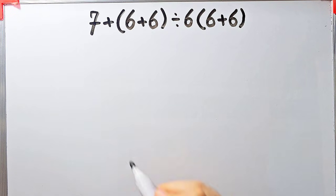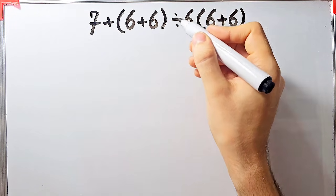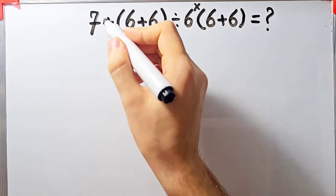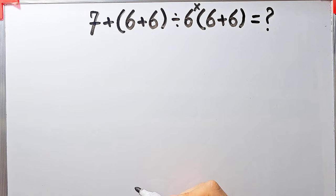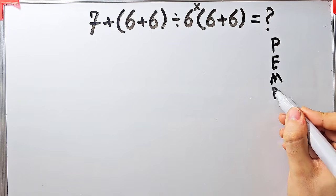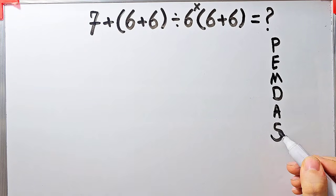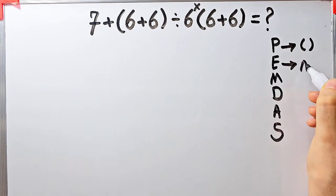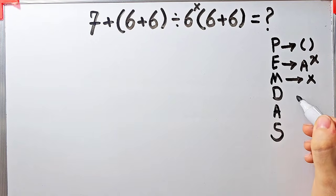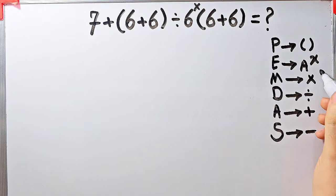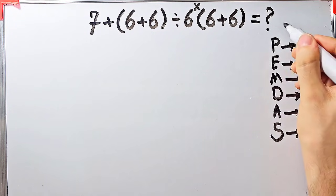Let's solve another question: 7 plus (6 + 6), divided by 6, then times (6 + 6). What is the answer? We have addition, parenthesis, division, and multiplication. To solve this question we need to follow PEMDAS. PEMDAS shows the priority of the mathematical operations. Multiplication and division have the same level of priority; addition and subtraction have the same level of priority. When we have both in an expression, we start from the left.